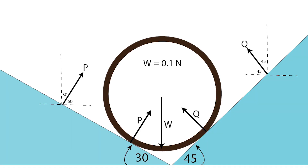There's a diagram of the apparatus, and we can see the cylinder is resting on the two slopes. So the two slopes are pushing back on the cylinder. We wish to know what are the forces P and Q that the slopes exert on the cylinder. We know the directions — we can see that from the diagram — and this cylinder has a weight of 0.1 newtons.